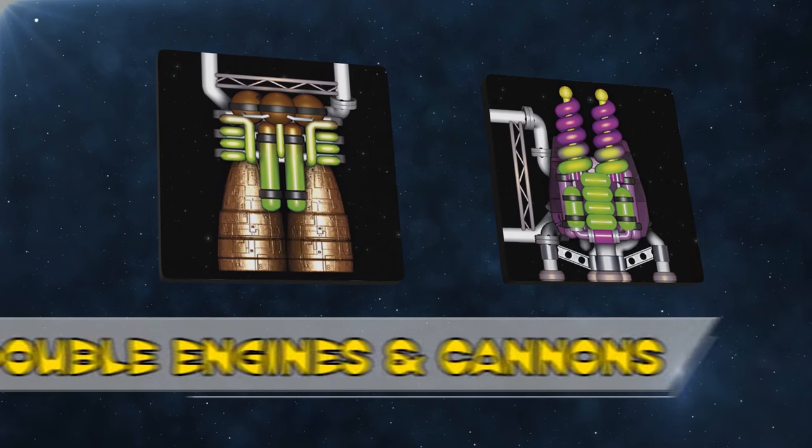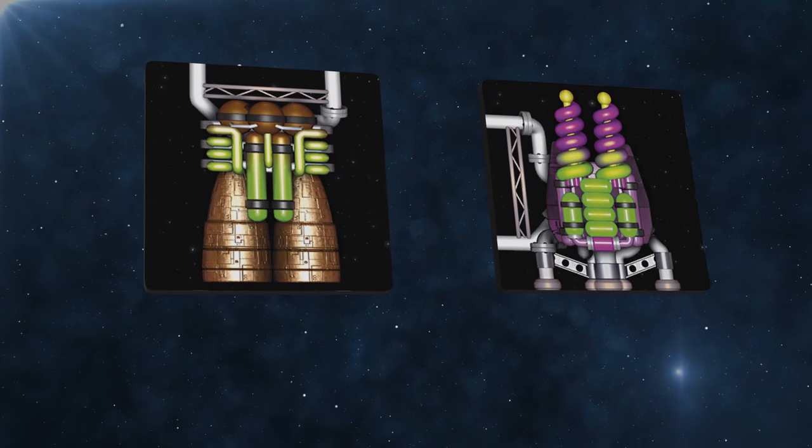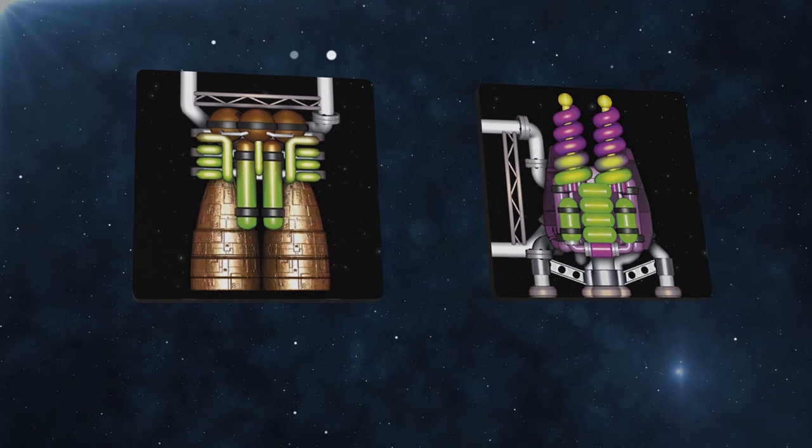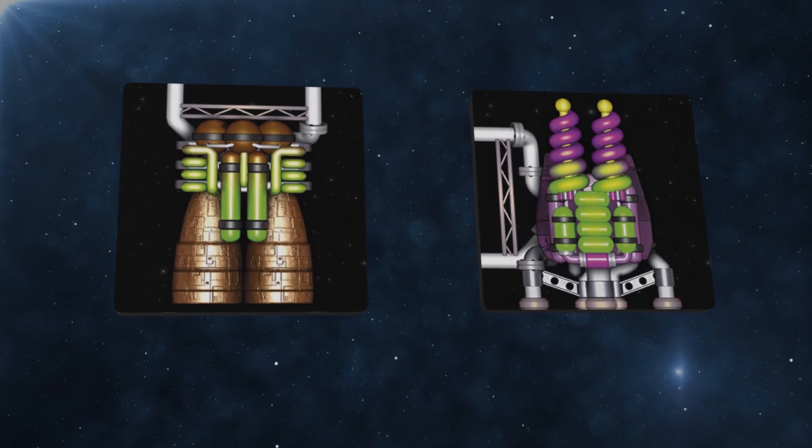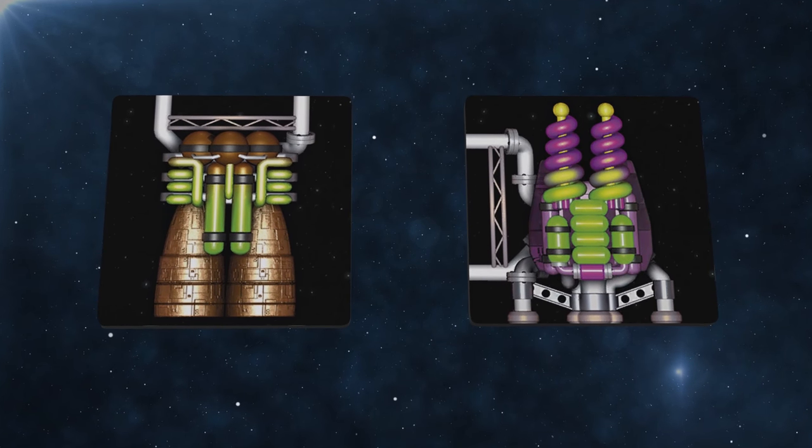These double components follow the same building rules as their simple equivalents. However, they're twice as powerful. The downside being that they require additional power to make them work. So if you have any of these components on your ship you'll also need some batteries.